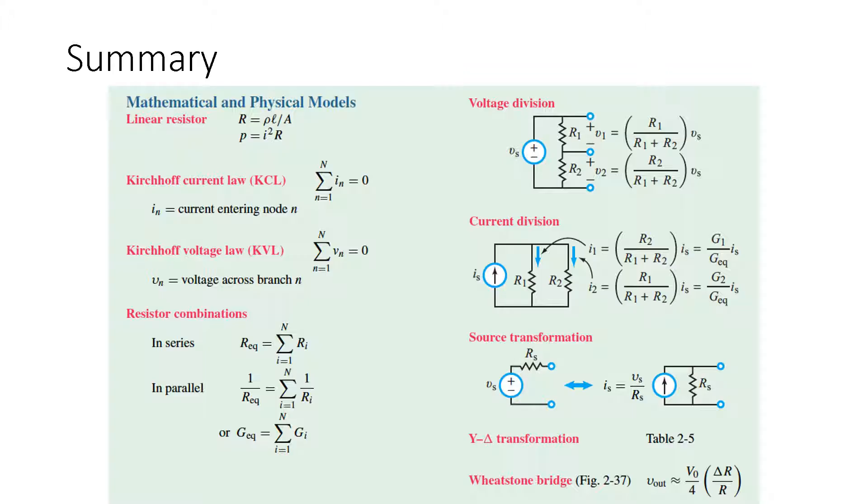And then also we have the Wheatstone bridge which again we solved a couple of these in class. And there's the basic equation for the Wheatstone bridge if it's been balanced properly: V out equals V0 over 4 and then the change in resistance over R. And again we're going to have some lab materials to go with that as well to really understand how it works.